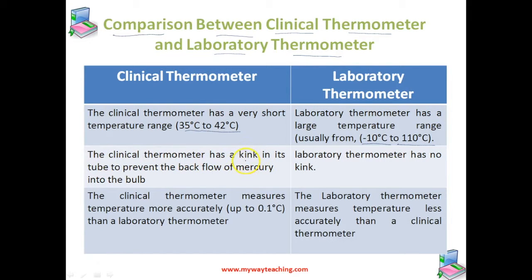The second point is the clinical thermometer has a kink in its tube to prevent the backflow of mercury into the bulb — that constriction — whereas in a laboratory thermometer there is no such constriction, because unless we read the temperature we will not remove the laboratory thermometer from the object. But in a clinical thermometer, we remove it from the mouth and then read it, so that constriction is needed to get the exact correct temperature of the human body.